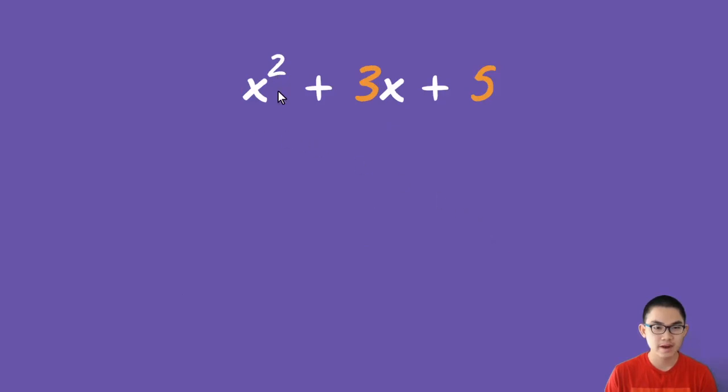For x squared plus 3x plus 5, again, here is the discriminant. And b squared is 3 to the power of 2, minus 4 times a. Here is 1, because this is the coefficient of the first term, which is 1. And c, which is 5.